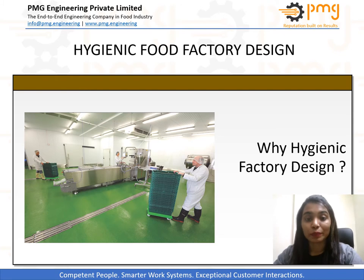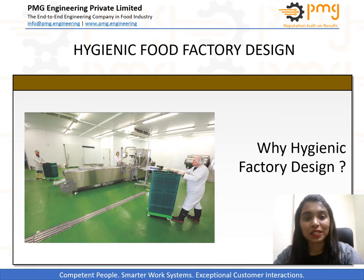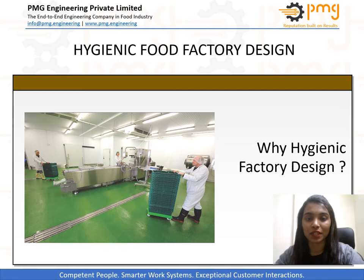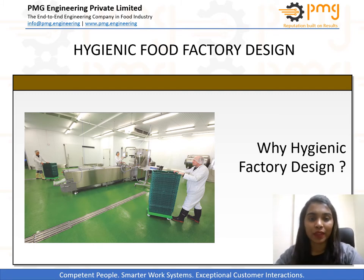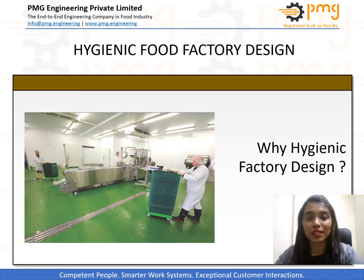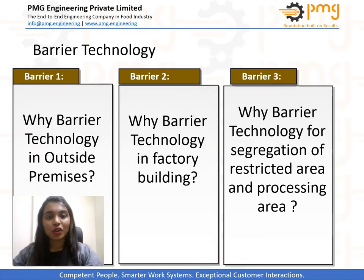Hygienic food factory design provides a wide range of benefits. It helps provide defense against external and internal factory hazards, with optimal designing eliminating possible harborage sites and giving security against deliberate contamination. This can be achieved by proper checks at the outside premises level, closing of factory buildings, and segregating restricted areas. Designing also facilitates proper internal flow of people, product, packaging, air, and waste to prevent physical, chemical, or microbial contamination.